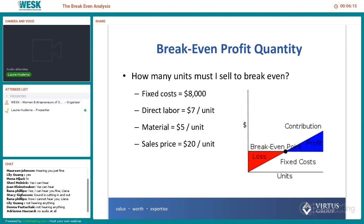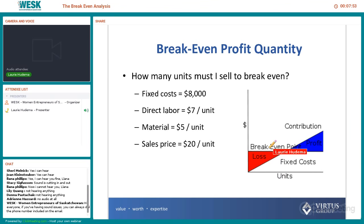So if we're looking at break-even point quantity — how many units must I sell to break-even? A good starting point, especially when you're starting a business, is knowing what your fixed costs are. In this example, we're going to use $8,000 with rent, insurance, and all the other fixed costs. Then we have direct labor of $7 per unit, materials of $5 per unit, and a sales price of $20 per unit. The break-even point is the intersection of two lines on the chart. So across this horizontal line is your $8,000 in fixed costs.